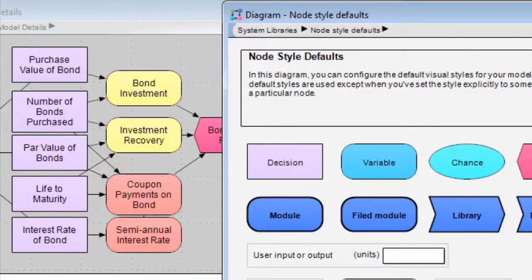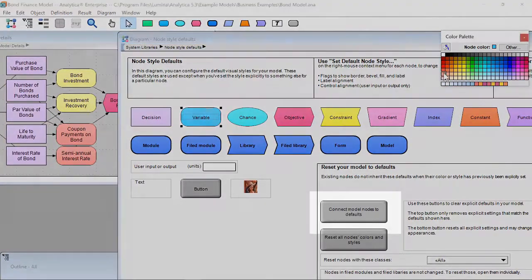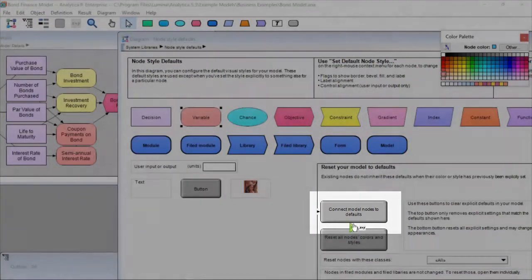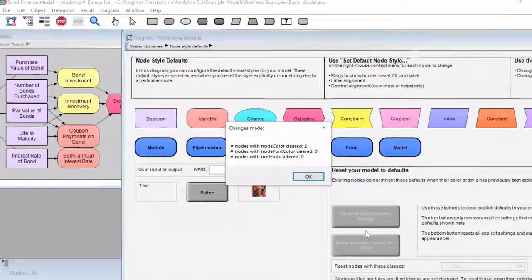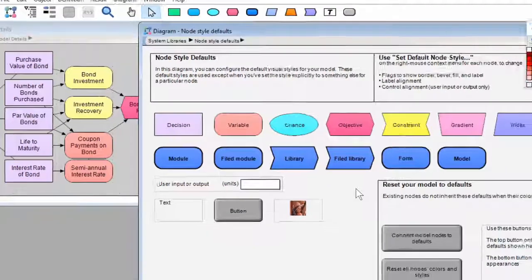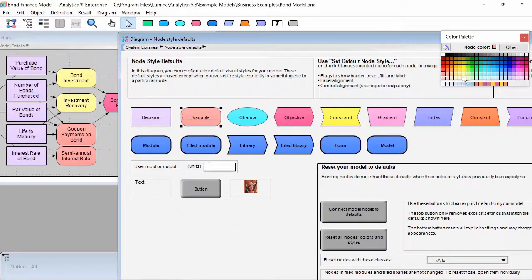I could go to the Node Style Defaults window and select that color as the global variable node color, and then hit play on the other button on the bottom right titled Connect Model to Node Defaults. Now, when we change the global color, all of the nodes in the model that were of the same color will now change with it. This is a big time saver for large models.